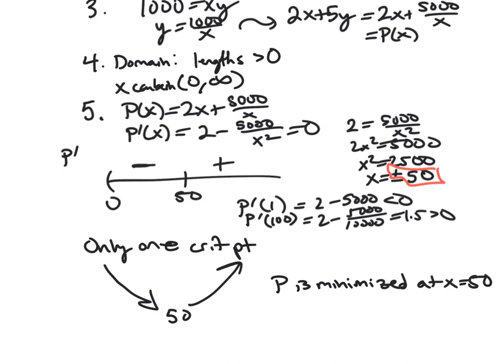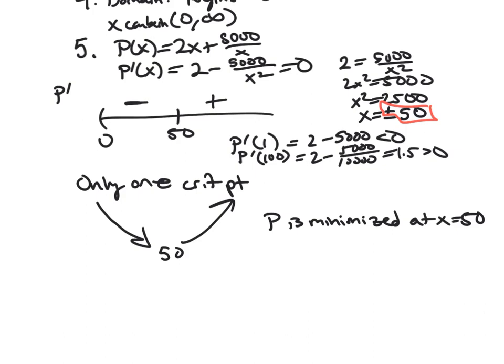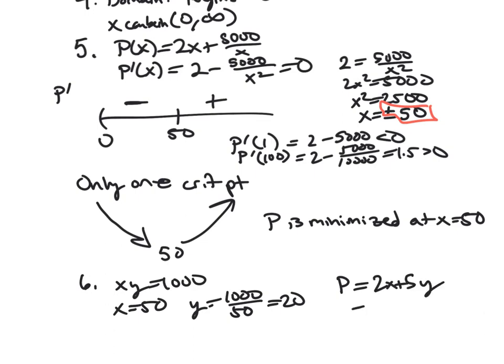And so then once we have that, we want to go back and figure out what is Y. So we know XY is 1,000. X is 50. And so Y is 1,000 over 50, which is 20. And so the dimensions here are 50 and 20. And so our P, we wanted to actually figure out what is the minimum amount of fencing used. And so our P was 2X plus 5Y. And in this case, that is going to be 100 plus 100. And so just 200 feet.